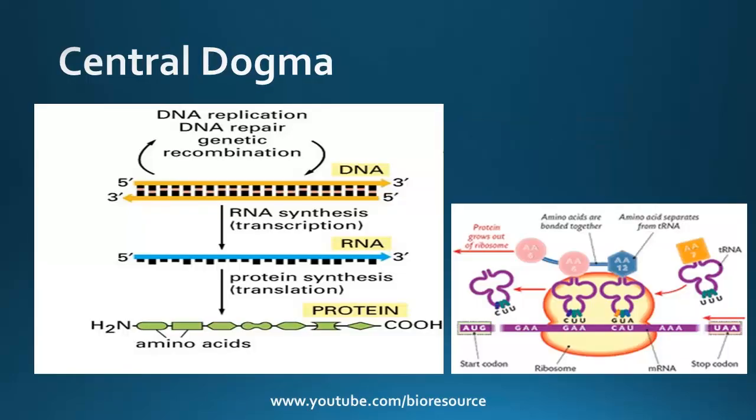If we look at the central dogma of molecular biology, we have DNA; from DNA, mRNA is synthesized through a process called Transcription. From RNA, protein will be synthesized through a process called Translation. And the RNA can be converted back to DNA using the enzyme reverse transcriptase, producing cDNA. If we look at the image on the right, we have the mRNA and the protein synthesis that happens in the ribosome, where the ribosome moves through the mRNA and the tRNA, which carries the amino acid, gets matched with the codons in the mRNA, and the polypeptide chain is built up, and hence the protein is synthesized.